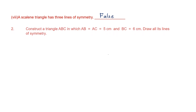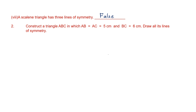Question 2: construct a triangle ABC in which AB equals AC equals 5 centimeters — so it's an isosceles triangle — and the third side BC is 6 centimeters. We then have to draw all its lines of symmetry. Begin by drawing a line segment, name it BC, measuring 6 centimeters.